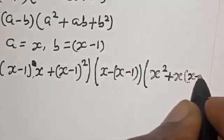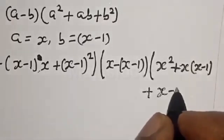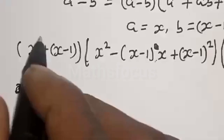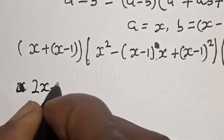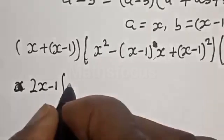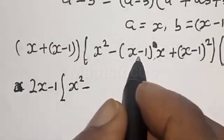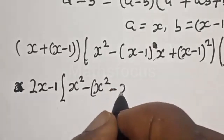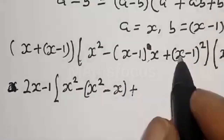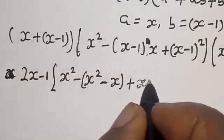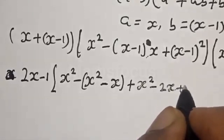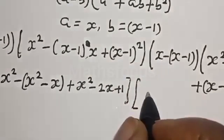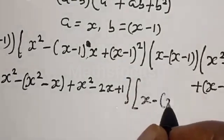Plus x times x minus 1 plus x minus 1 squared. Now let's consider this: here is x plus x minus 1, this is 2x minus 1, multiplied by x squared minus x times x, that is x squared minus x, plus x minus 1 squared, which is x squared minus 2x plus 1.